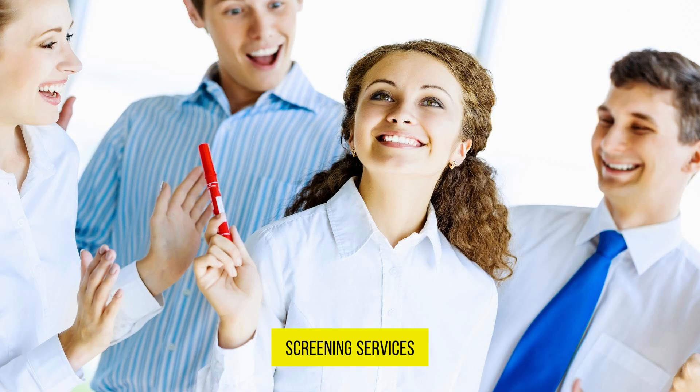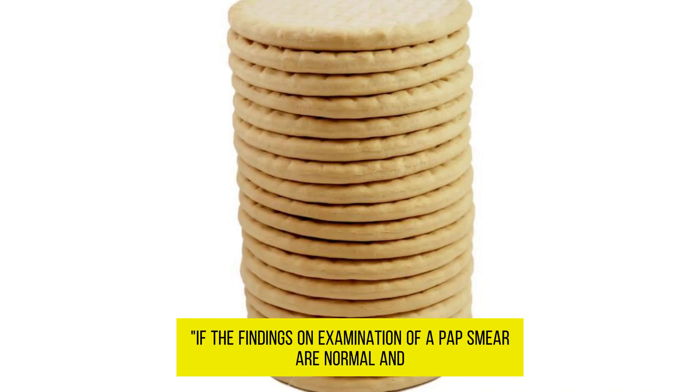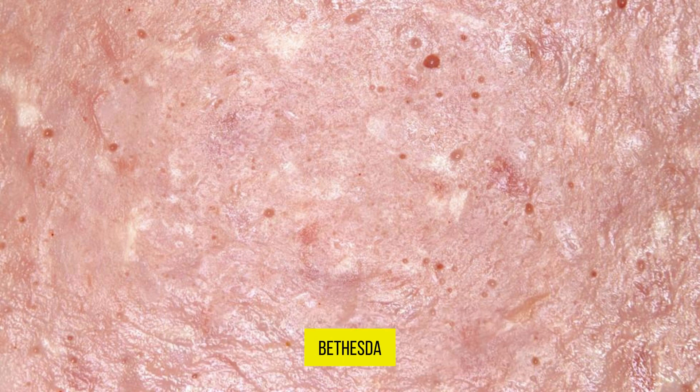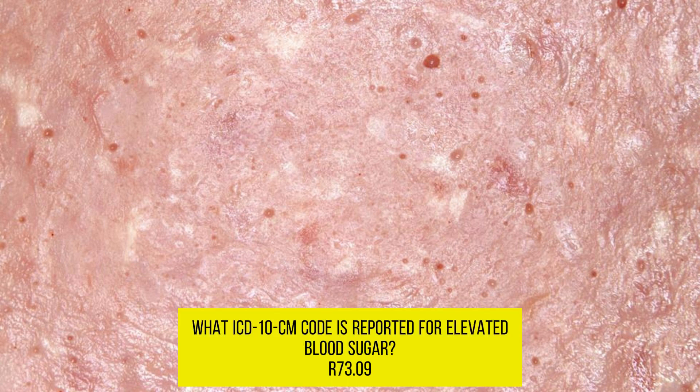Screening services. If the findings on examination of a pap smear are normal and described as negative for intraepithelial lesion or malignancy, this is an example of what type of results reporting? Bethesda. What ICD-10-CM code is reported for elevated blood sugar? R73.09.